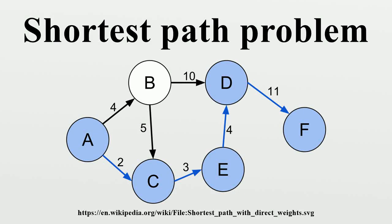In graph theory, the shortest path problem is the problem of finding a path between two vertices in a graph such that the sum of the weights of its constituent edges is minimized.